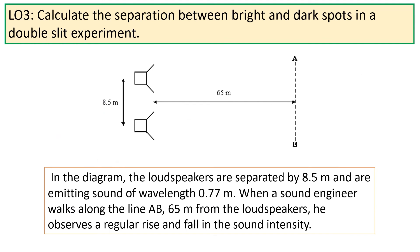Let's go through an example. In the diagram, there are two loudspeakers producing sound, which are separated by 8.5 metres. They're emitting sound of a wavelength 0.77 metres. When a sound engineer walks along the line AB, 65 metres from the speakers, he observes a regular rise and fall in the intensity of the sound.